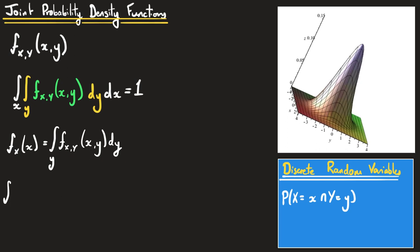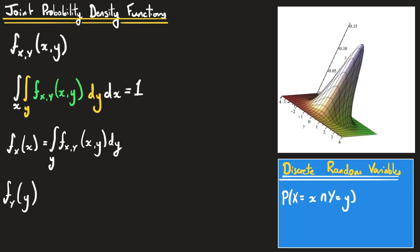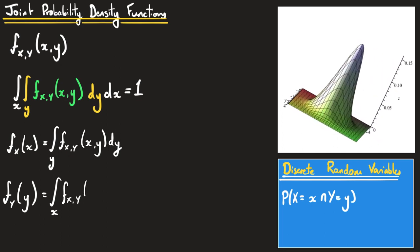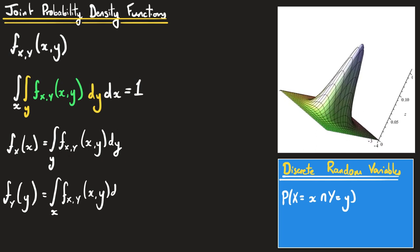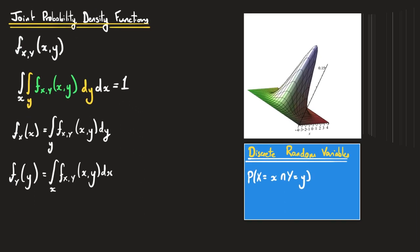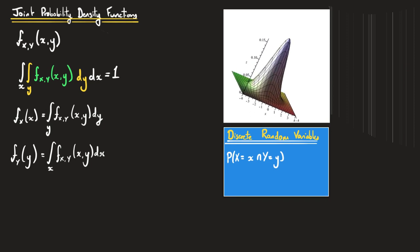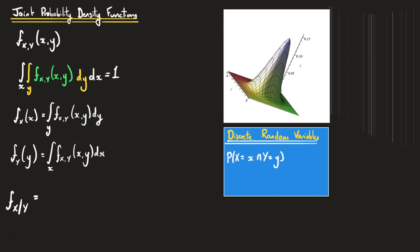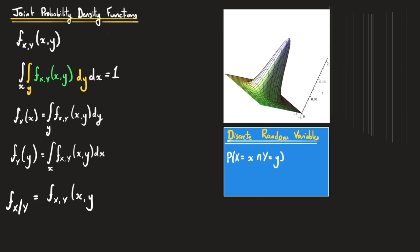Similarly, if we want to find the probability density function of y, this is just the integral over the full range of x of our joint probability density function integrated with respect to x. The conditional probability density function of x given y is calculated in exactly the same way as before: the PDF of x conditional on y equals the joint PDF divided by the marginal PDF of y.